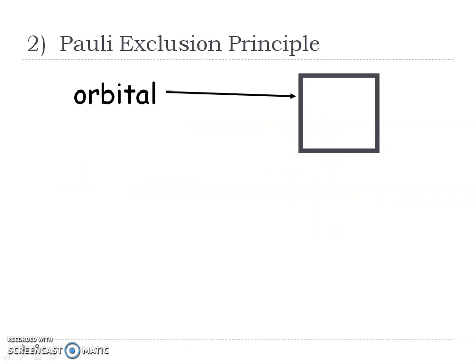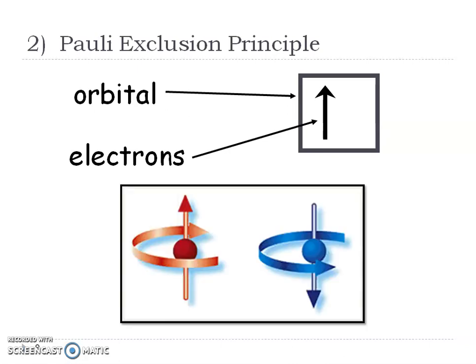If we think about that orbital — like that box — the first electron is going to be arrow up, and because those electrons repel each other, they're going to have opposite spin. So if there's a second electron that goes in that orbital, we show it with an arrow down.